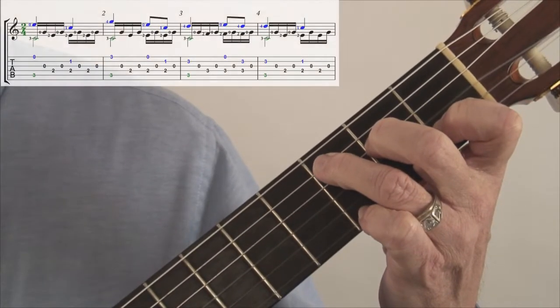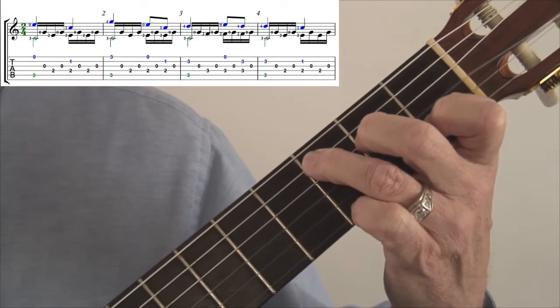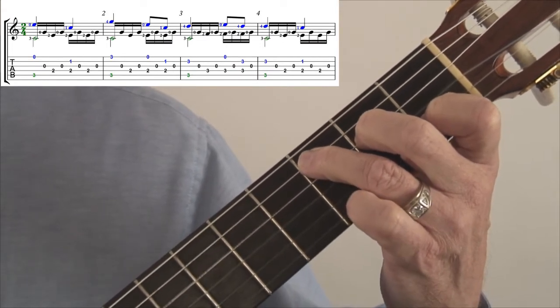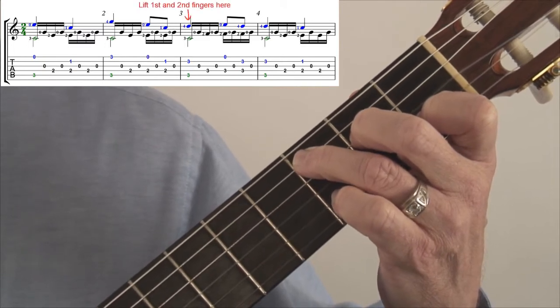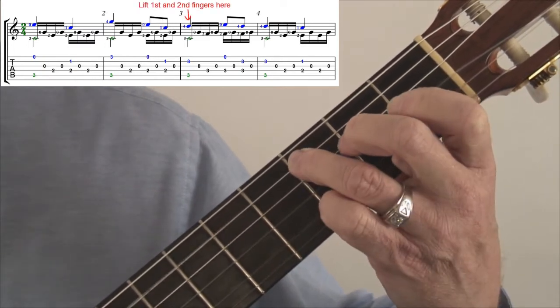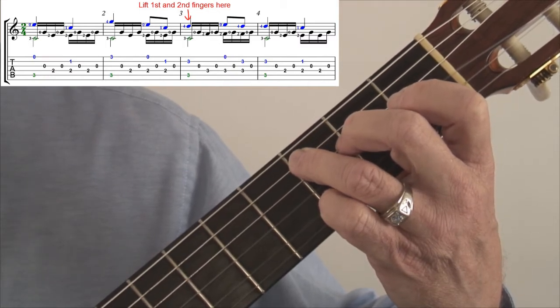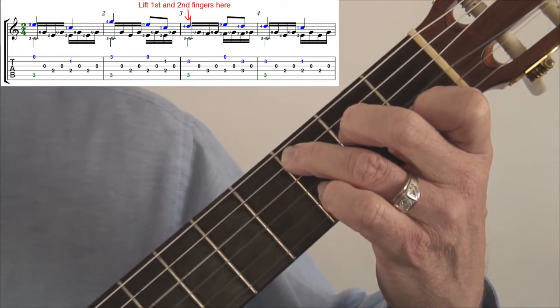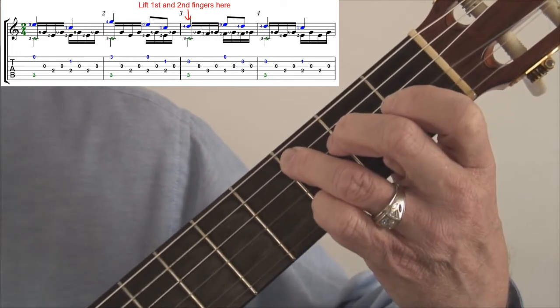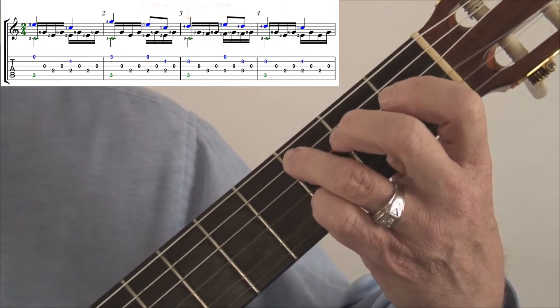Going into measure three and continuing into four and five, give me our measure two. When you hit the downbeat of measure three, lift your first and second fingers right on that downbeat. Just get off the strings. Lift. One and two come off. Play the open G.